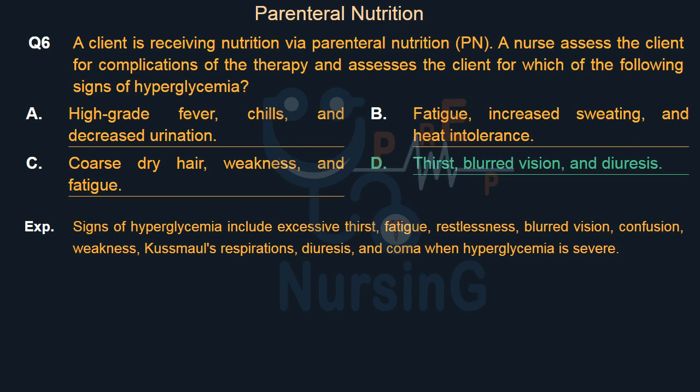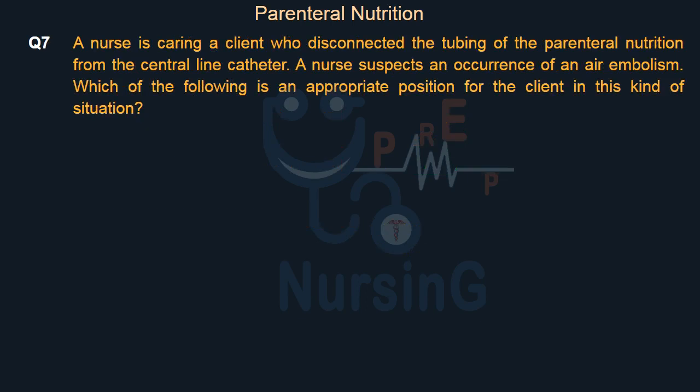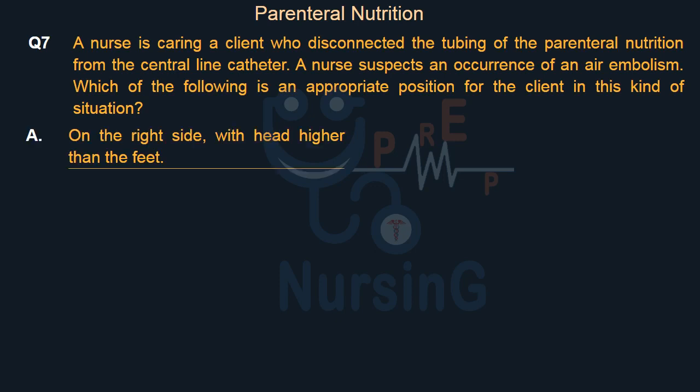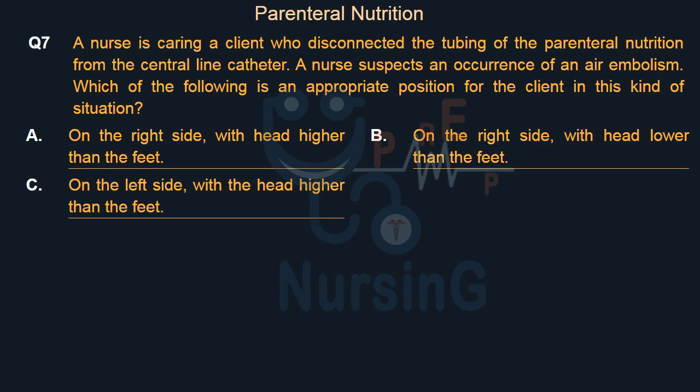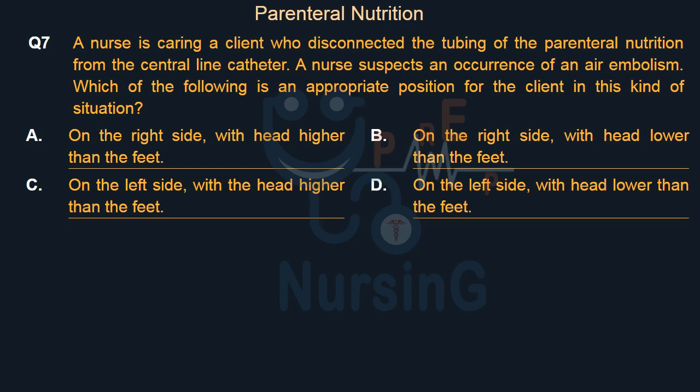A nurse is caring for a client who disconnected the tubing of the parenteral nutrition from the central line catheter. The nurse suspects an occurrence of an air embolism. Which of the following is an appropriate position for the client in this situation? Option A: On the right side, with head higher than the feet. Option B: On the right side, with head lower than the feet. Option C: On the left side, with head higher than the feet. Option D: On the left side, with head lower than the feet.